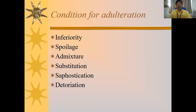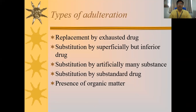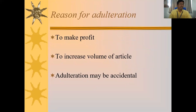There are six conditions for adulteration: inferiority, spoilage, admixture, substitution, sophistication, and deterioration. The types of adulteration include replacement by exhausted drug, substitution by superficially similar but inferior drug, substitution by artificially made substances, substitution by substandard drug, and presence of organic matter. The main reasons for adulteration are to make profit, to increase the volume of the article, and adulteration may also be accidental.